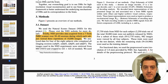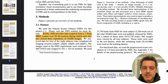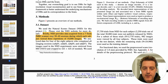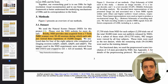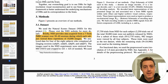Here's a bit about the dataset. The NSD dataset provides data acquired from a 7 Tesla fMRI scanner over 30 to 40 sessions, during which each subject viewed three repetitions of 10,000 images. So a subject is sitting there being shown images, and the fMRI is reading the brain activity.